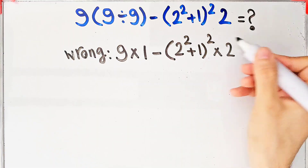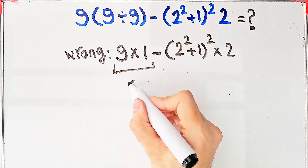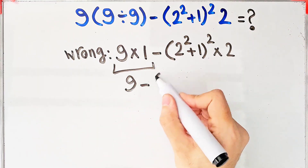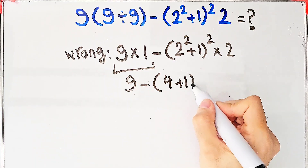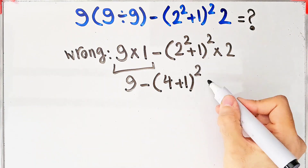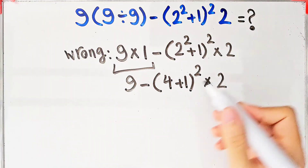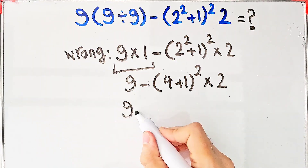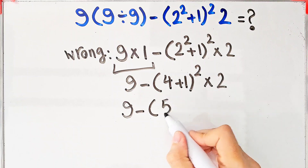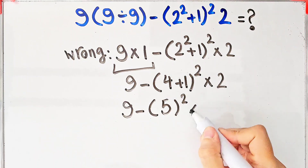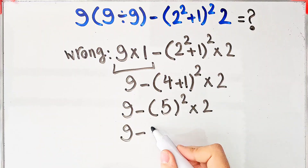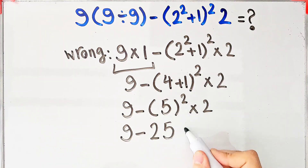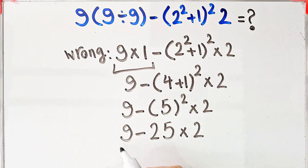Nine times one equals nine. Nine minus two to the power of two, which equals four, then plus one, then all of them to the power of two, then times two. Four plus one equals five. Nine minus five to the power of two, which equals twenty-five, then times two. Nine minus twenty-five equals negative sixteen.